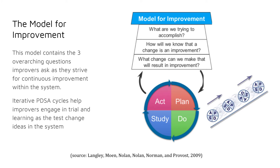This is the model for improvement from which we work in the networked improvement communities. Three overarching questions guide this model. The first question is: what are we trying to accomplish? To answer this question, members define clear, measurable goals that they hope to achieve.